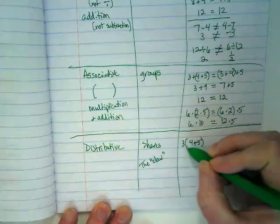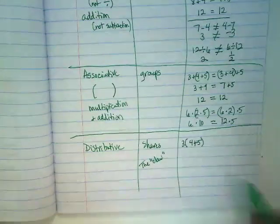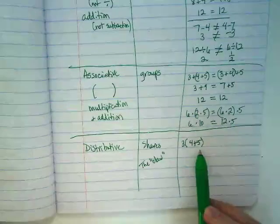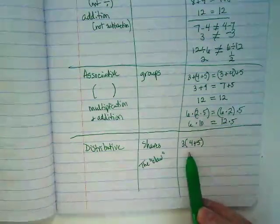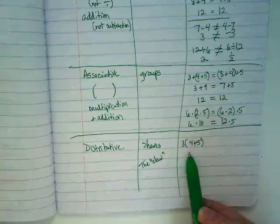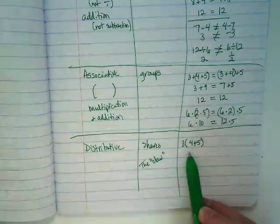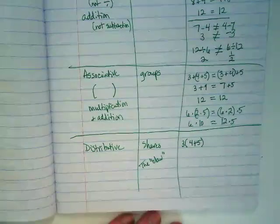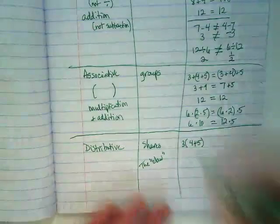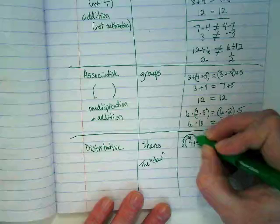This 3 is being multiplied by the 4 and by the 5. In reality, this is a pretty simple problem. We could do 4+5 first, which is 9, and multiply it by 3 to get 27. But I'm going to use this problem to show you the distributive property, which can help with harder numbers. We know our answer is going to be 27. Here's the claw.